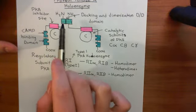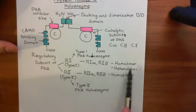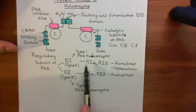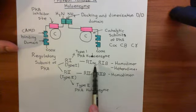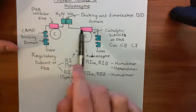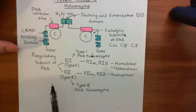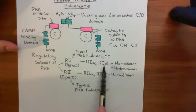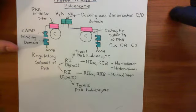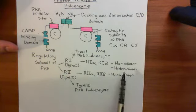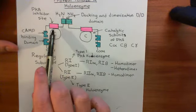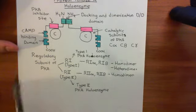With regards to dimerizing these together, you can either form homodimers. For instance, you can form a homodimer of the type 1 regulatory subunit alpha, in which you have two type 1 regulatory subunit alphas dimerized together. Or you form a homodimer of type 1 regulatory subunit beta. Alternatively, you can also form heterodimers, in which you have one type 1 regulatory subunit alpha dimerized to one type 1 regulatory subunit beta.